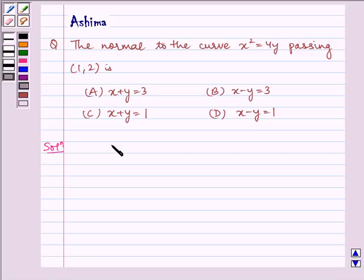Given to us is x squared is equal to 4y, or it can be written as 4y is equal to x squared. Now differentiating both sides we get 4 dy by dx is equal to 2x. This 4 gets cancelled by 2, which implies dy by dx is equal to x by 2.